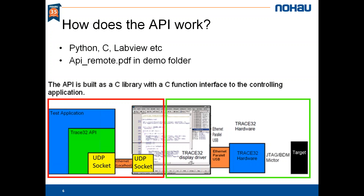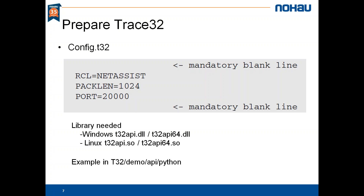If you have an AMP debug setup with many Trace32 instances, each instance needs its own port so you can communicate with all of them. You need to prepare Trace32 for this in the config.t32 file: set RCL equal to net assist, set the pack length to 1024, and decide what port Trace32 should listen on. The required libraries come pre-made for Windows 32 and 64 bits and also for Linux 32 and 64 bits.